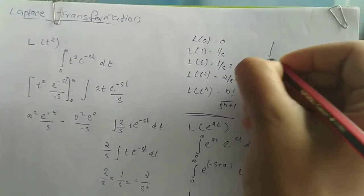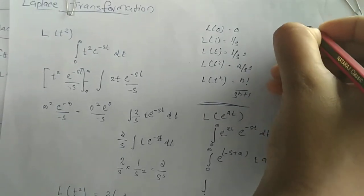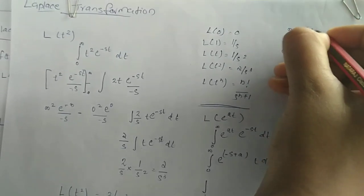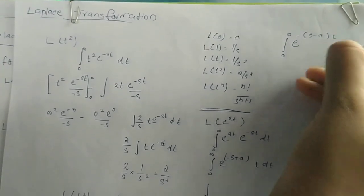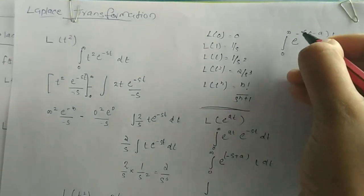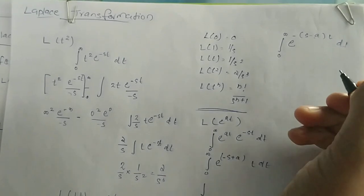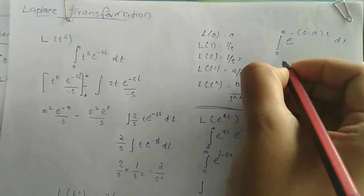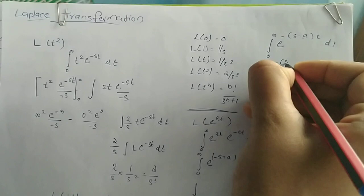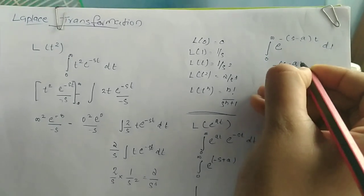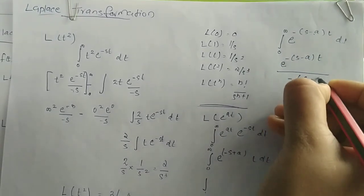Evaluating the integral from 0 to infinity of e raised to minus s minus a into t, we get e raised to minus s minus a into t divided by minus s minus a, evaluated from 0 to infinity.